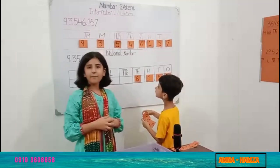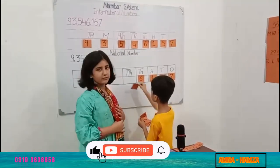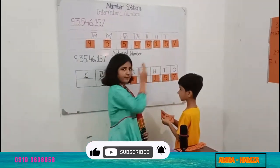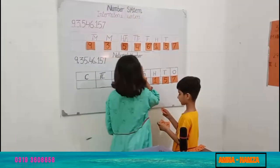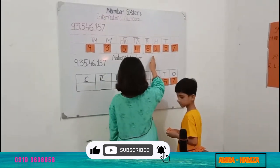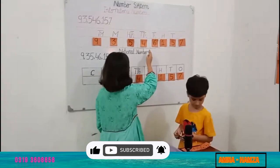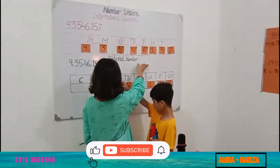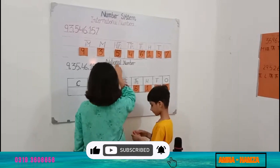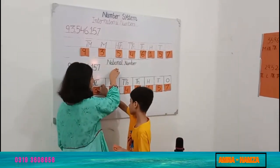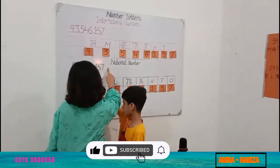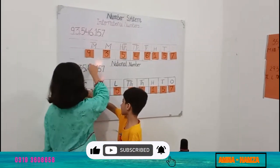Now I will tell you about the values of these. 7 is 7, 5 is 50, and 1 is 100, and 6 is 6,000, and 4 is 40,000, and 5 is 500,000, and 3 is 3,000,000, and 9 is 90,000,000.